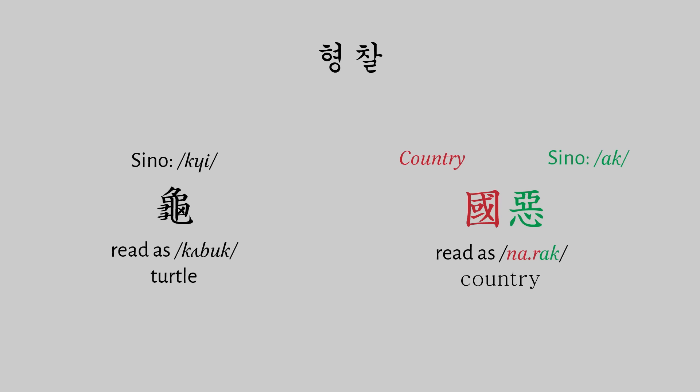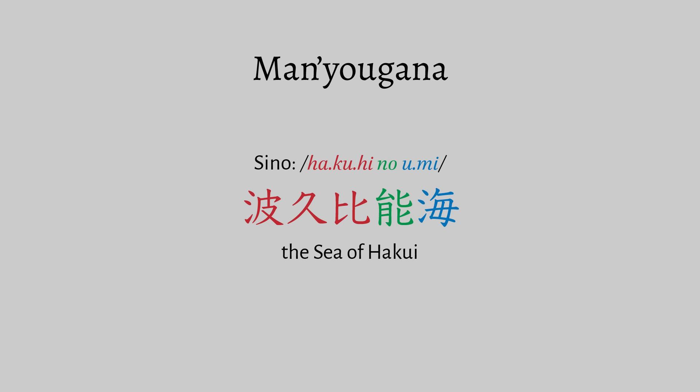Hyangchal, a derivative of Yidu, followed many of the same practices but had two unique features. First, some characters could be read as their native Korean equivalent — used for semantic rather than phonetic value. For words with two syllables, like the old Korean word for country, 'narak,' the first character would show the word's meaning while the second would match phonetically with the word's last syllable. Unfortunately, Hyangchal wasn't very widespread, with Yidu being used more commonly. In Japan, the rebus principle yielded manyogana, where a character would be used for its given phonetic value — similar to Yidu, but unlike Yidu, manyogana was mainly phonetic, with only a few semantic characters for common words.